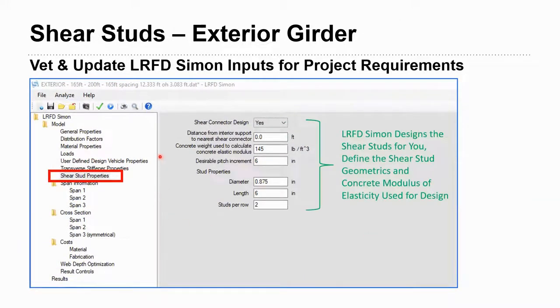And then the shear stud properties tab. LRFD Simon will also design your shear studs and come up with the quantity of those for estimated purposes. So I've gone ahead and toggled yes, I'd like LRFD Simon to go ahead and design those for me. I'm starting it right at the center line of my bearing at my abutment. I'm using the density of concrete 145, excluding my reinforcement from that. The pitch is the longitudinal spacing along the girder. I've indicated six inch preference. I don't want less than that in general if I can help it. I have seven-eighth inch diameter shear studs that are six inches tall or long, and there's two studs in cross section, sometimes three or even four if you have a wide enough top flange.